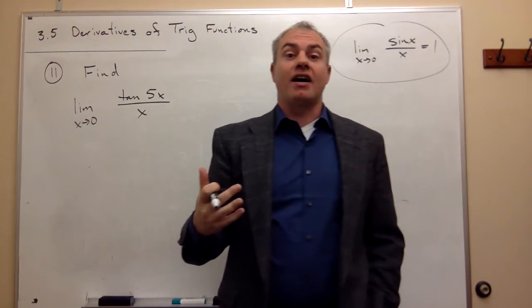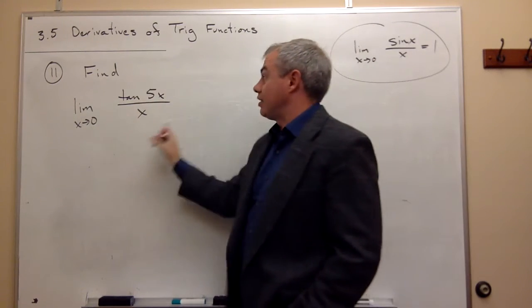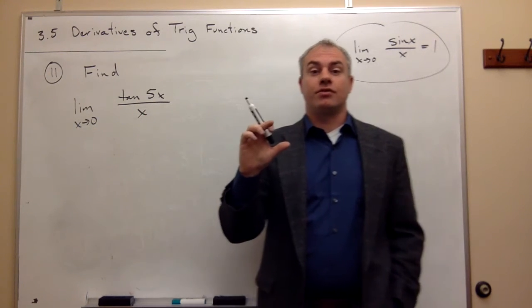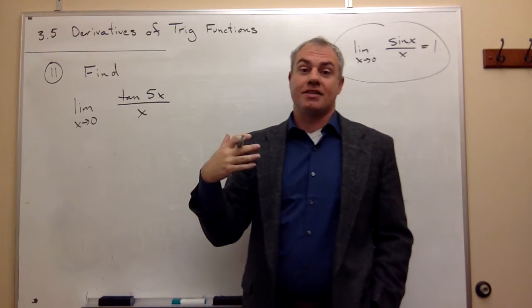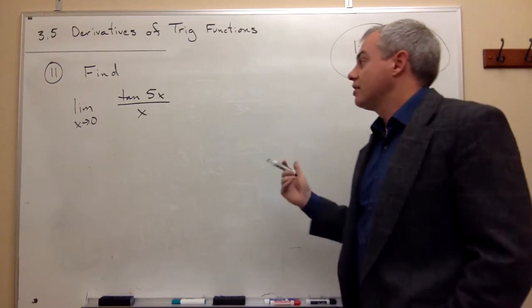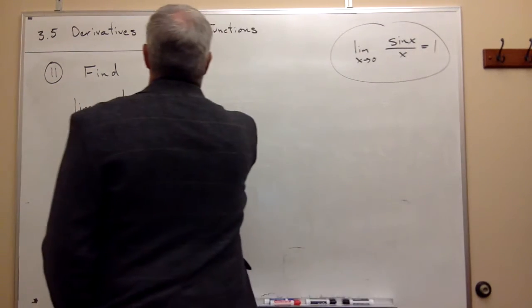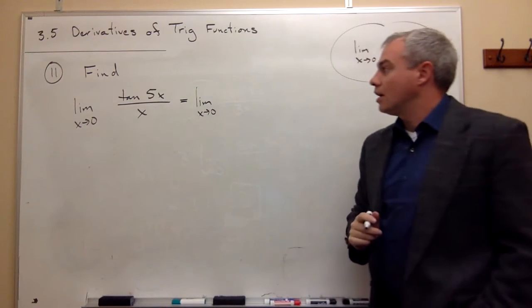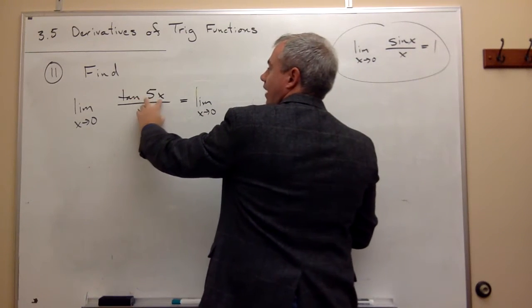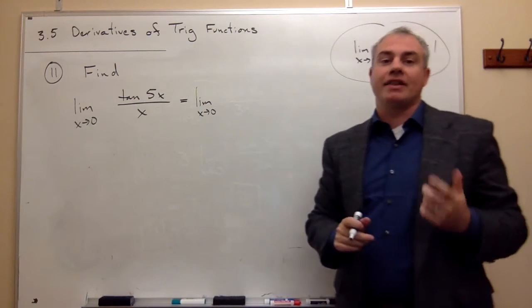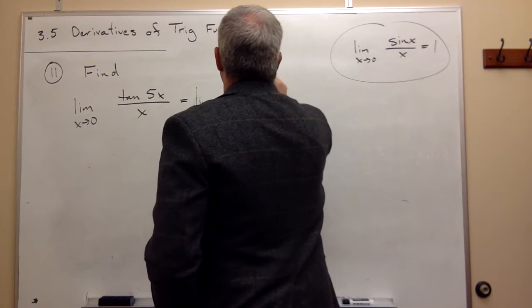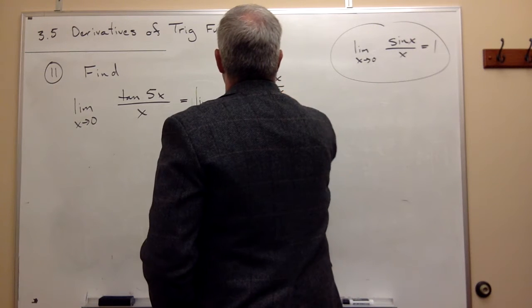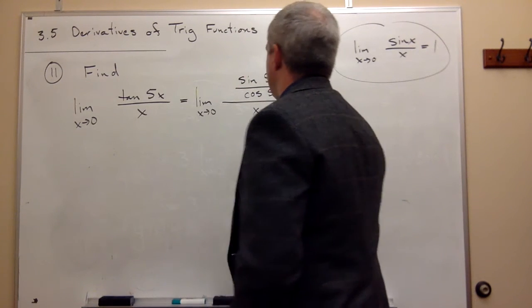Well, we don't have any sines involved right here, so what we should do is take this tangent of 5x and change it into what it equals, and that is sine of 5x divided by cosine of 5x. So let's rewrite it that way. We get the limit as x goes to 0 of tangent of 5x, and I want to rewrite that as sine of 5x divided by cosine of 5x, and that's all divided by x.